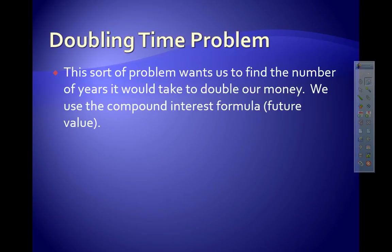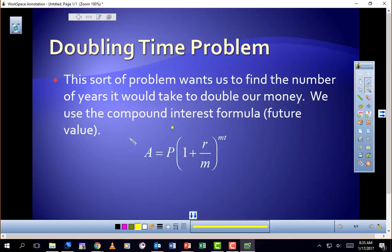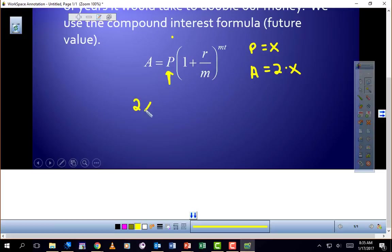Now let's look at a doubling problem. Doubling time. What we do, the thing you need to realize is that no matter what the money is, if it doubles it's going to look like this. Let's say the amount that we put in the bank, let's say it's X. It could be a million dollars, it could be ten dollars, it could be a thousand dollars. If it doubles, then the future value is going to be twice that.